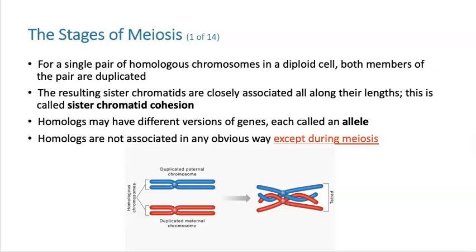Those sister chromatids are going to be closely associated across their entire length in something called sister chromatid cohesion. Just remember that the homologs have different versions of the gene called alleles. Keep that in mind, because that's going to be really important when we think about the interesting things that are going to happen in meiosis.